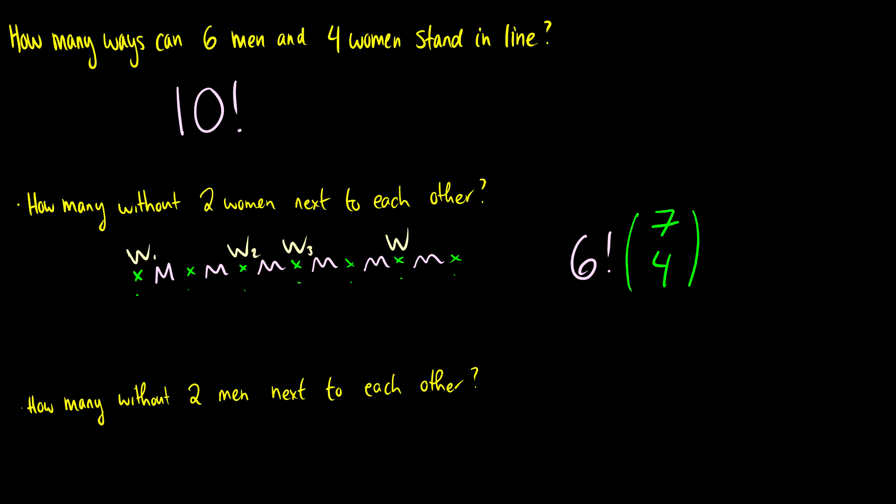So women one, women two, women three, women four. There's going to be four factorial ways to arrange those women. So our final result is going to be six factorial times seven choose four times four factorial.